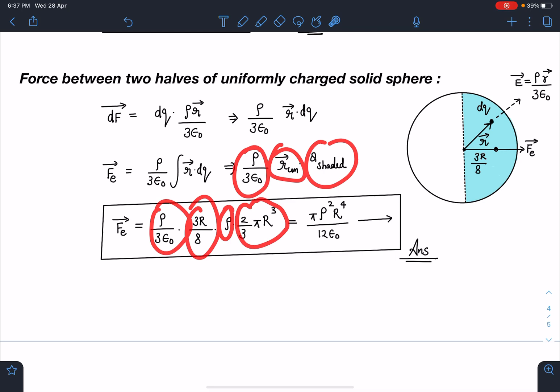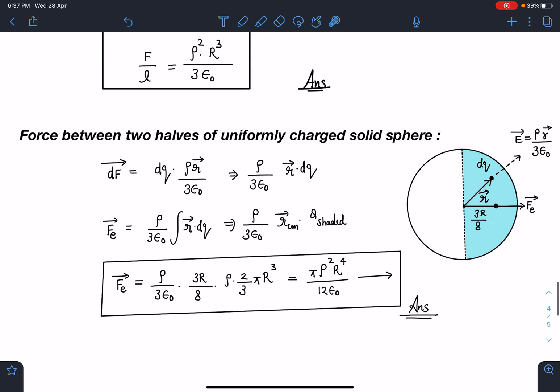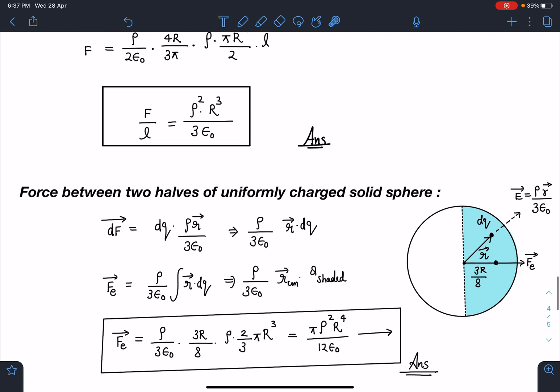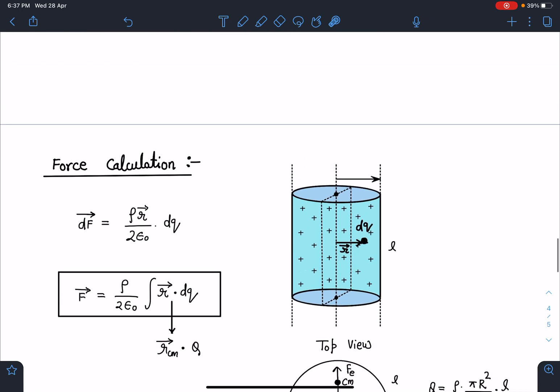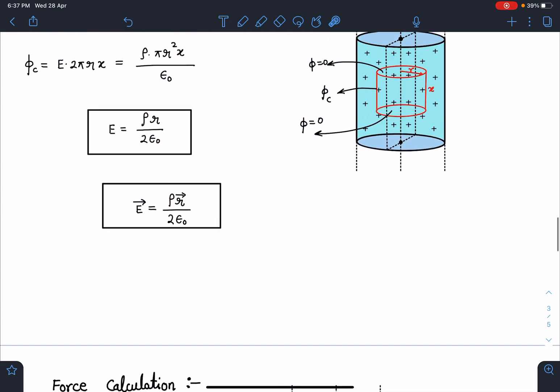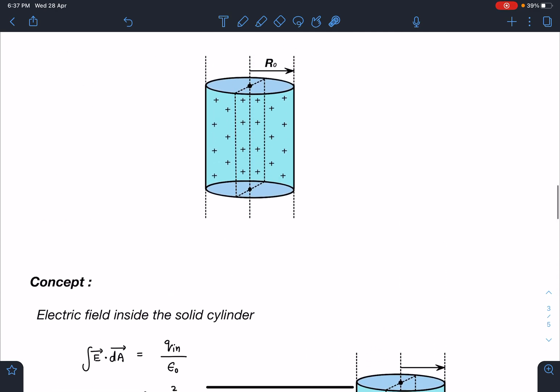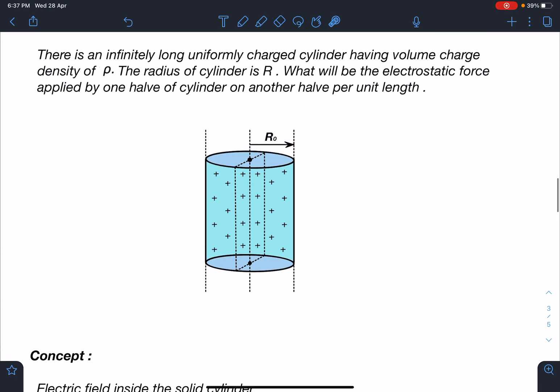ρ by 3ε₀, r_cm is 3r by 8, q_shaded will become ρ times 2 by 3 πr³. When you simplify you are going to get this answer as πρ²r⁴ by 12ε₀. It's just one liner if you know this concept. I will be bringing more such problems where we are going to use this trick. If you have enjoyed this video please leave a like, share this video with others, and if you haven't subscribed my channel please subscribe it. Thank you, thanks for watching.